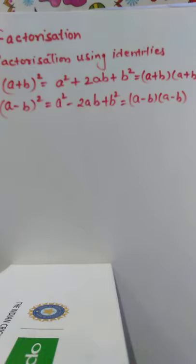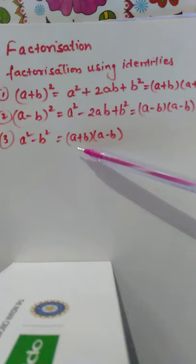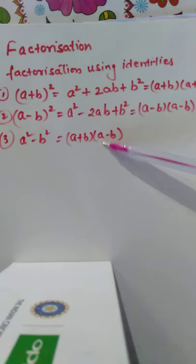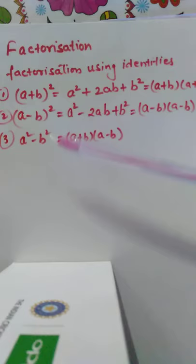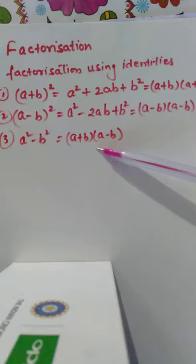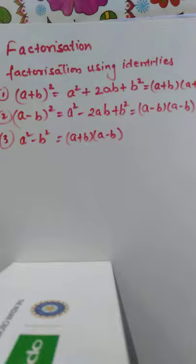The third identity is a squared minus b squared, which equals a plus b into a minus b. This is the product form and these are the factors. Both a squared and b squared are perfect square terms, so when perfect square terms are given, we can write them as a plus b into a minus b. Now let us try to solve some questions from Exercise 14.2.